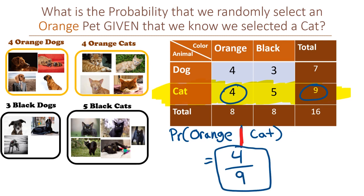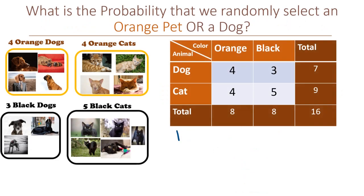Last one, what is the probability that we randomly select an orange pet or dog? We can do this two ways. We can think it through or we can use the addition rule since you're seeing the word 'or' there.